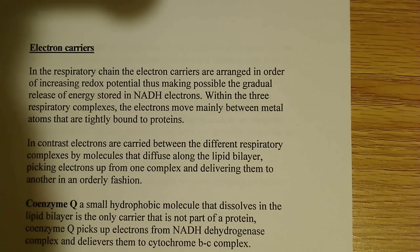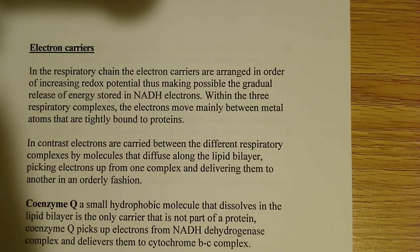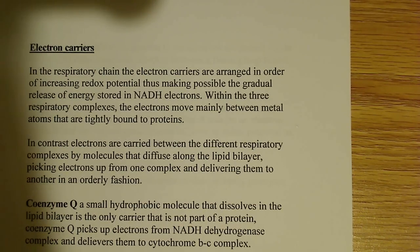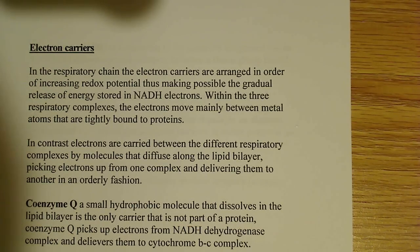Within the three respiratory complexes, the electrons move mainly between metal atoms that are tightly bound to proteins. It's probably not all that weird to hear that, because cytochromes are very similar to hemoglobin. They both have a heme group, and we know that's dealing with iron.